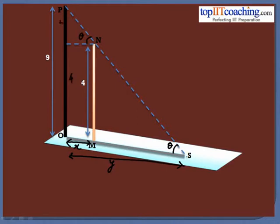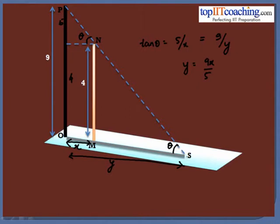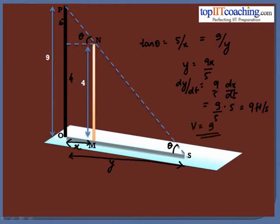So this length would be equal to 5. Therefore tan theta equals 5/x in this triangle, and if we take the whole triangle, this is also equal to 9/y. So we see that y equals 9x/5. Now if we differentiate both sides with respect to t, that is time, we get dy/dt equals 9/5 times dx/dt. Now dx/dt is the speed of the man, which equals 5 feet per second. Putting this value, we get 9 feet per second as the speed of the shadow. Thus we have calculated the first part.